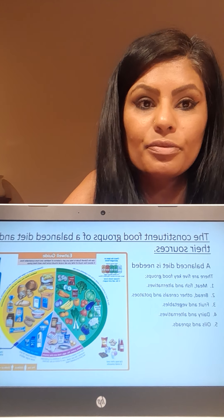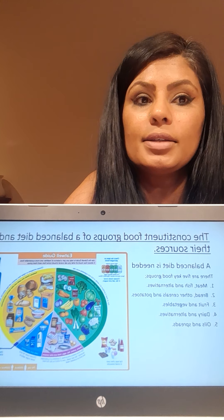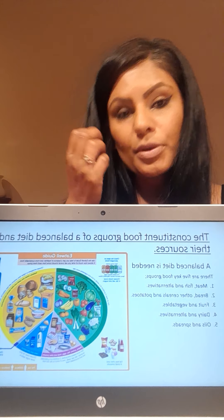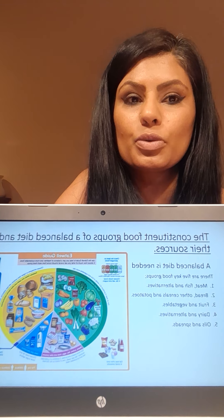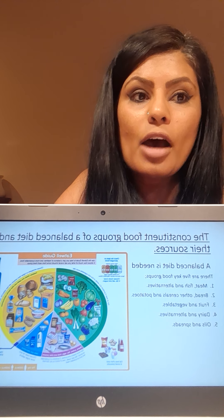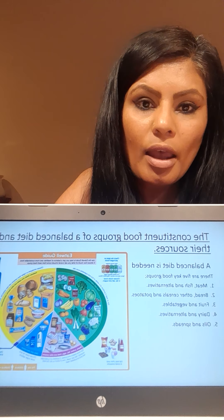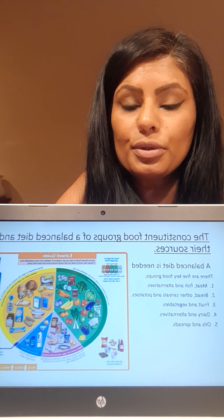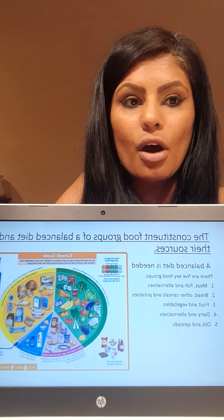Food group two is carbohydrates, which includes foods such as bread, cereals, and potatoes. These help to support energy, stamina, and strength. Food group three is fruits and vegetables, which are a good source of vitamins and minerals and help the immune system. Examples include kale, green vegetables, lettuce, and cabbage, which are good sources of iron.